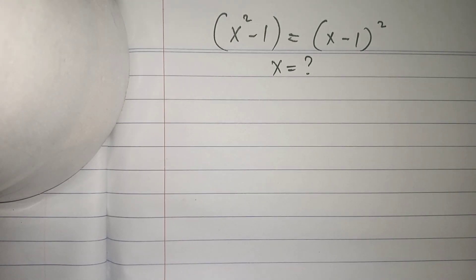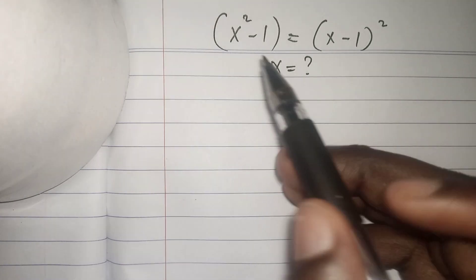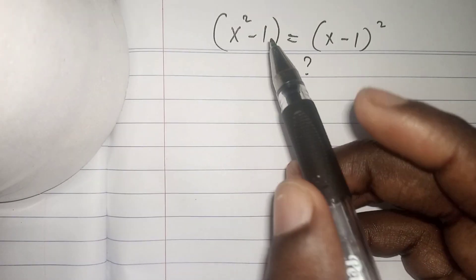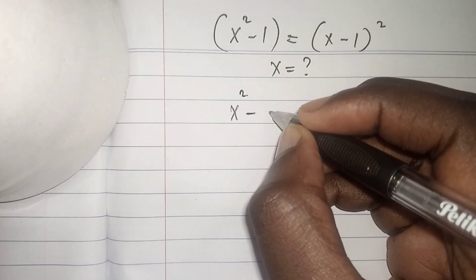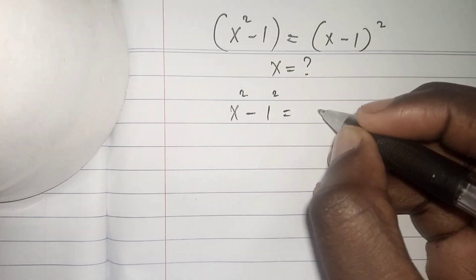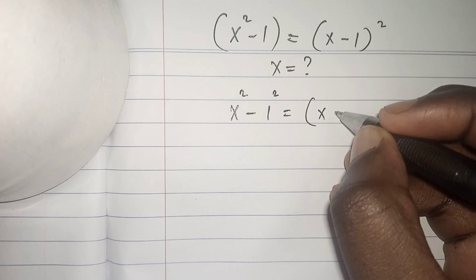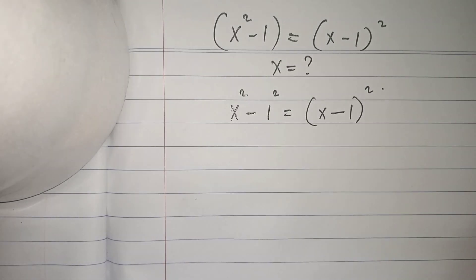Our first step: we can write x² - 1 as (x² - 1) equals (x - 1)².